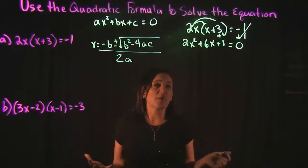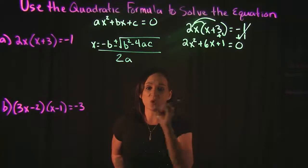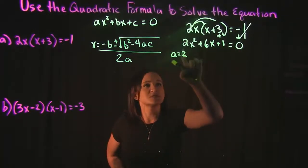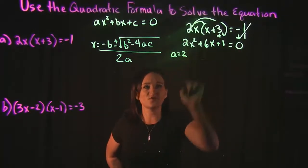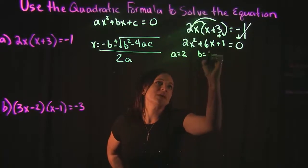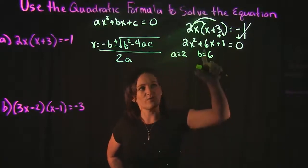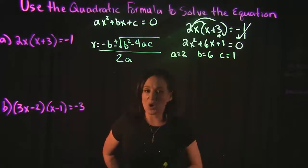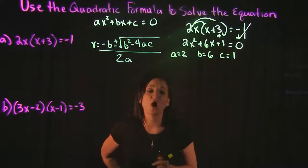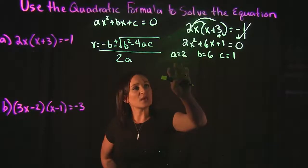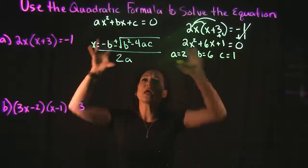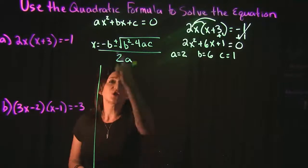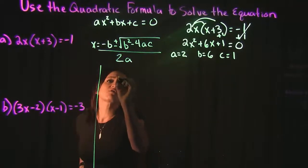This is proper quadratic form. Once it's in proper quadratic form, you can label what a, b, and c are. a is equal to 2, since it's the coefficient of the x squared term. b is equal to 6, since it's the coefficient of the x to the first power term. And c is equal to 1, since it's the constant. Now that we know what a, b, and c are, we can plug them into our formula and simplify.